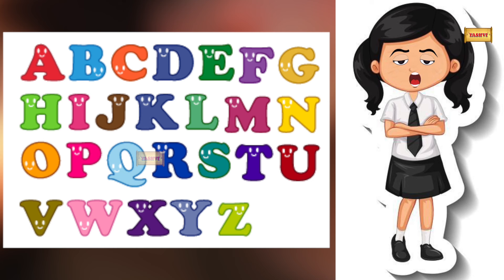F for fan, G for gun, H for hen, I for ink, J for jug.